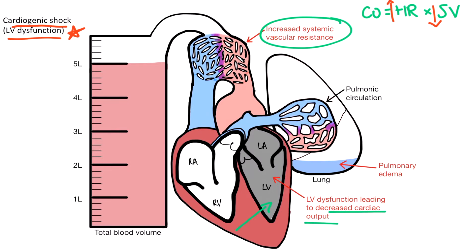This increase in left ventricular preload, coupled with failure of the pump function on the left side of the heart, yields an increased pulmonary capillary wedge pressure and backup of fluid into the lungs, resulting in pulmonary edema. The pulmonary capillary wedge pressure is an indirect measure of the left atrial pressure and therefore provides information about the left ventricular preload. It's measured by inserting a catheter with a balloon into the pulmonary circulation, inflating the balloon, and measuring the pressure there. Because the pulmonary circuit is a low pressure system and the left atrium is where it empties, this is an acceptable surrogate for left atrial pressure.